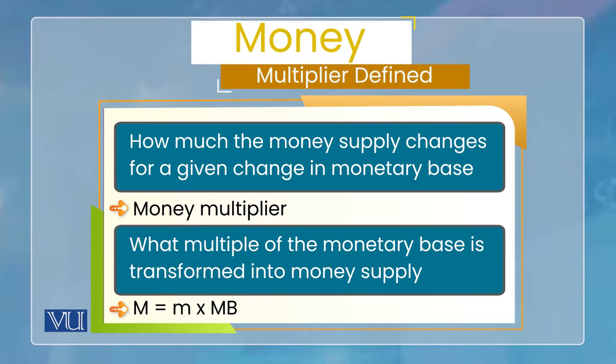تو money supply is always equal to m (money multiplier) multiplied by MB (monetary base)۔ MB is monetary base, which is basically central bank's money۔ It multiplies by m to get the value of total money supply۔ تو وہ جو multiple کی بات ہو رہی ہے وہ یہ m ہے — اسی کو ہم money multiplier کہہ رہے ہیں اور یہ پورا lecture اسی m کے اوپر ہے۔